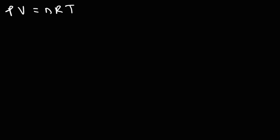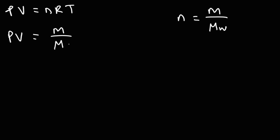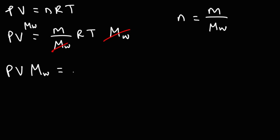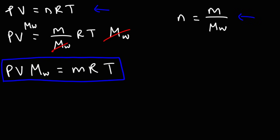Going back to PV = nRT, moles equals mass divided by molar mass. Replacing n with m over MW and rearranging, we get: pressure times volume times molar mass equals mass times R times T. This formula is very useful if you need to calculate the molar mass of a gas, or its mass.